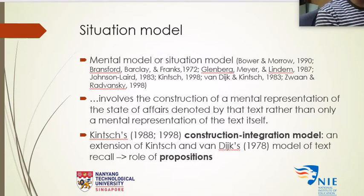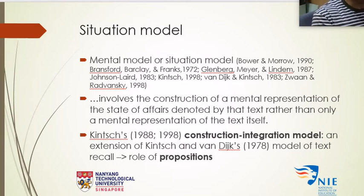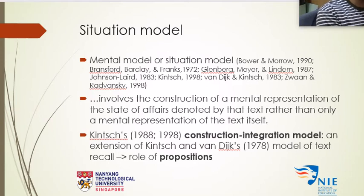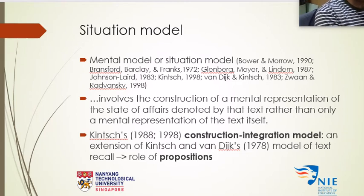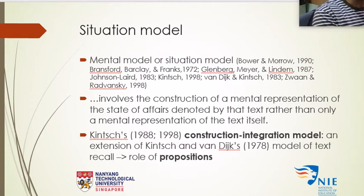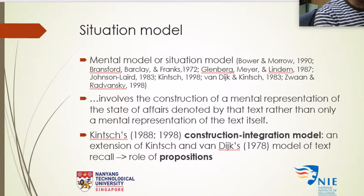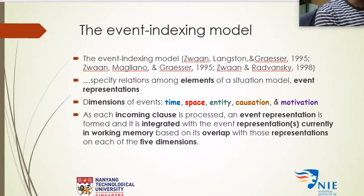We add world knowledge to the text we hear or read because we want to develop what we call the situation model. If we are not able to add knowledge or experience to what we read, a situation model will not be generated. A situation model is basically evolving — what you generate in this part of the text is the local representation, and that local representation evolves gradually as you obtain more information. That's what I wanted to elaborate, and now I want to move on to the event indexing model.